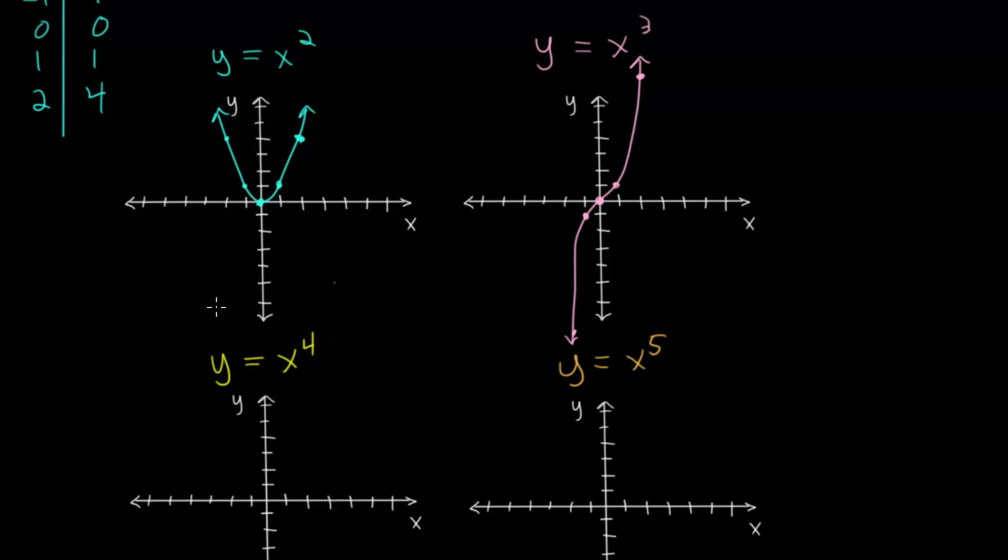So again, for this one, we could make a table. We have, when we plug in 0, we get 0. 1, we still get 1. And when we plug in negative 1, now we're multiplying it 4 times, so we can pair 2 and 2, and so that they all cancel out and become positive. So negative 1 will give us a y value of 1.